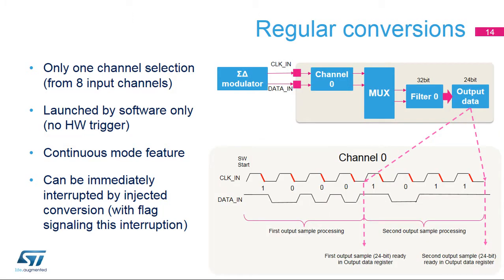Regular conversions have lower priority and can be interrupted by an injected conversion. If the regular conversion was interrupted by an injected conversion, it is restarted once the injected conversion is finished and this interruption is indicated as a flag for the delayed regular conversion. Regular conversions can be launched only by software and there is no scan mode available. They can run in continuous mode with no channel switching and can be performed in fast mode without filter refill. Regular conversions are used for measurements where timing is not critical, such as measuring temperatures or slow signals, and are typically used for continuous conversions from one channel, for example, audio or energy measurement applications.